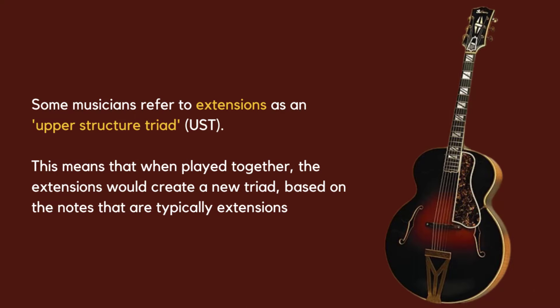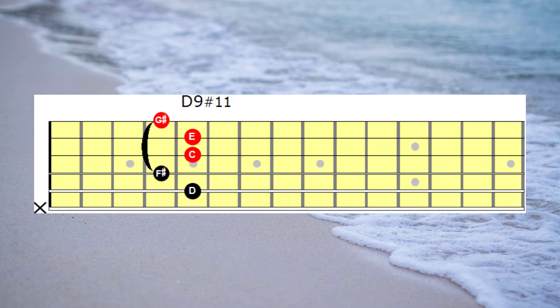And this is what we mean by playing these augmented chords as an upper extension. Now if I went through every note of that chord and just identified what the relationship of each note is with the D9 sharp 11, we'd find that the G sharp would be the sharp 11, E would be the 9th, C would be the 7th, F sharp would be the 3rd and D would be the root.